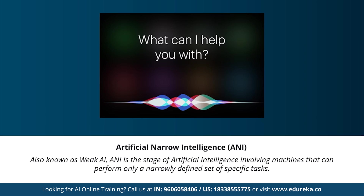Artificial narrow intelligence, also known as weak AI, is a stage of artificial intelligence where machines can perform only a narrowly defined set of specific tasks. At this stage, the machines don't possess any thinking ability — they just perform a set of predefined functions. Examples of weak AI include Siri, Alexa, AlphaGo, Sophia, and self-driving cars. Almost all AI-based systems built to date fall under the category of weak AI.